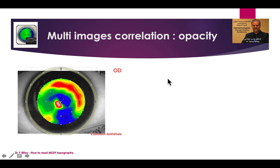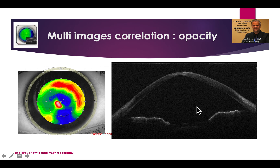When you have a keratoconus with a donut image but there is thickening inside, in this case you should examine the OCT and you will find opacities and irregularity of the stroma. So in every case of an epithelial mapping, you should look at the OCT scans to look for any haziness or irregularities or scars in the stroma.